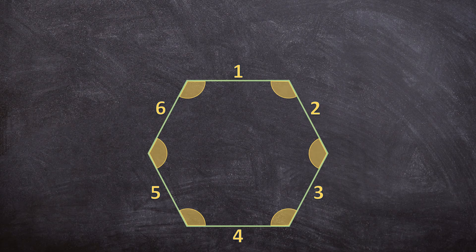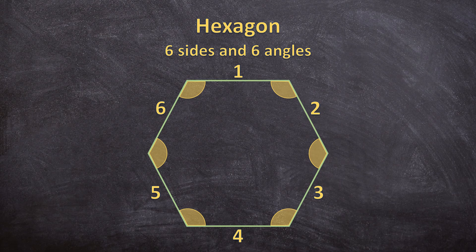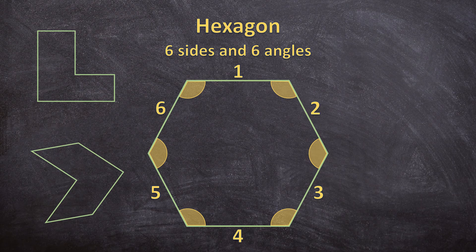And now for a polygon with 6 sides and 6 angles. That is called a hexagon. And here are a few more examples of hexagons. They all have 6 sides and 6 angles.